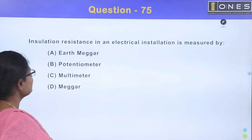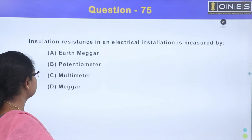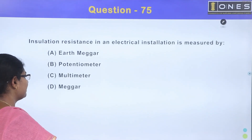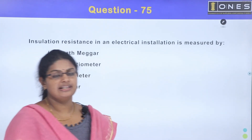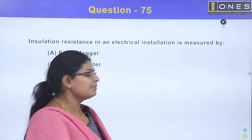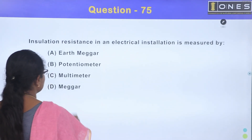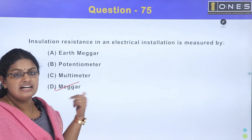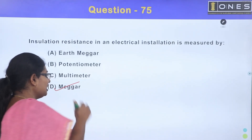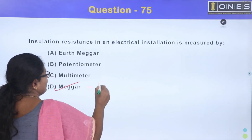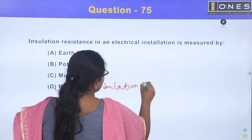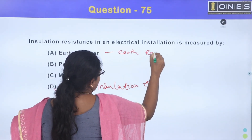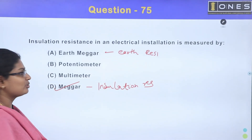Insulation resistance in an electrical installation is measured by: Option A, Earth Megger; Option B, potentiometer; Option C, multi-meter; Option D, Megger. Insulation resistance is a high value, so we use a Megger to measure it. The answer is Option D, Megger.